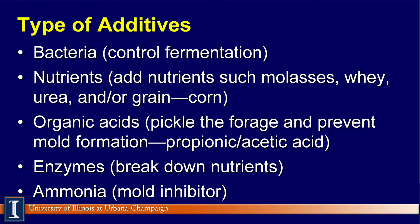There are a number of different additives we can add to silages to enhance fermentation bacteria — the goal there is to control fermentation — to add nutrients such as molasses, whey, urea, or ground corn and barley to enhance feedstuffs for the bacteria to ferment. Organic acids can pickle the forage, drop the pH, and prevent the formation of mold. Enzymes help break down nutrients, and ammonia, which is a mold inhibitor.